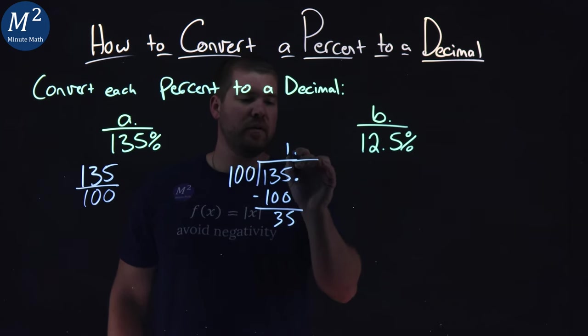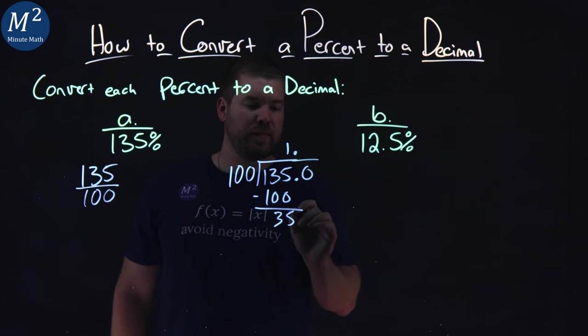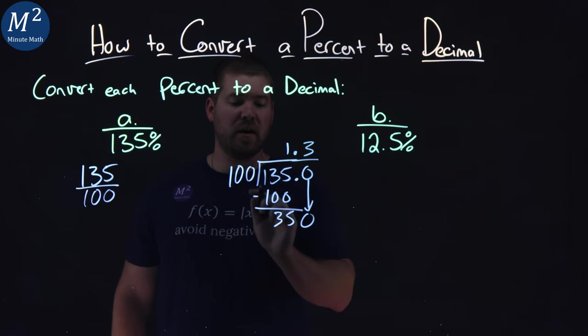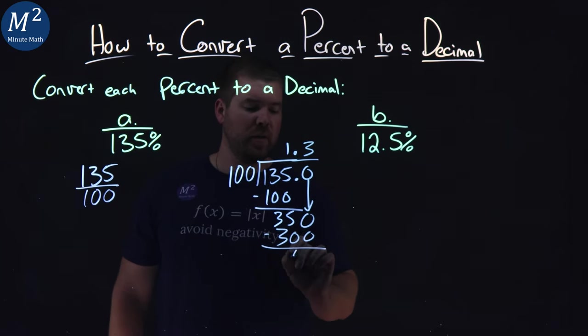Put a decimal place here, decimal place here, and put a 0. And bring it down. Can 100 go into 350? That's 3 times. 3 times 100, 300, subtract it again, we've got 50. 350 minus 300 is 50.